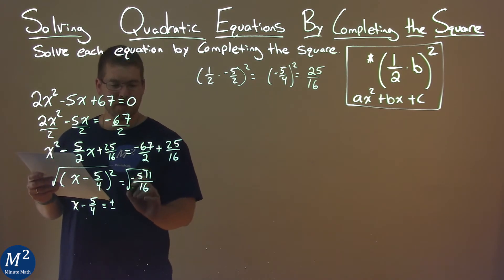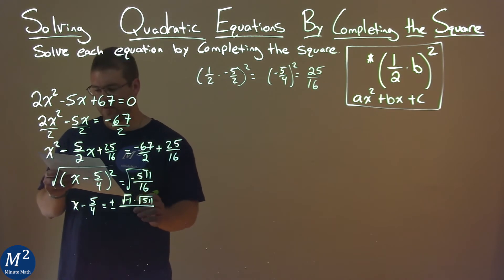We can take the square root of each part individually, and the numerator breaks down to the square root of 511. The denominator, the square root of 16, is just 4.